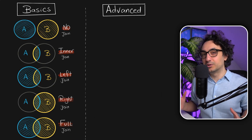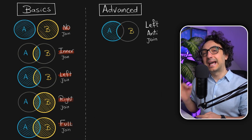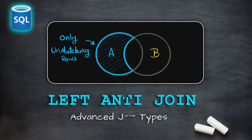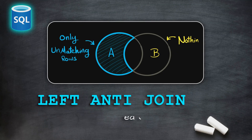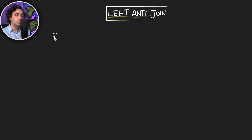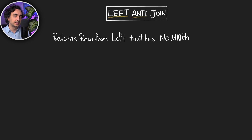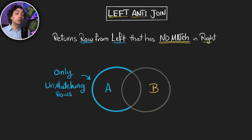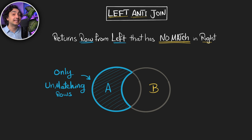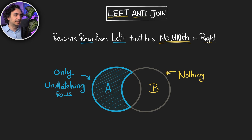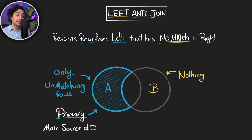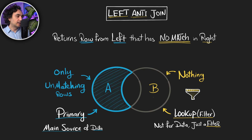Now we're going to start talking about advanced SQL joins, and we're going to cover the first part: the left anti-join. In this mechanism, we want to return rows from the left table that have no match in the right table. From the left table we want to see only the unmatching rows — rows that exist in table A but not in table B. From the right table we don't want any data; we are just joining the tables to do a check, to filter the data.